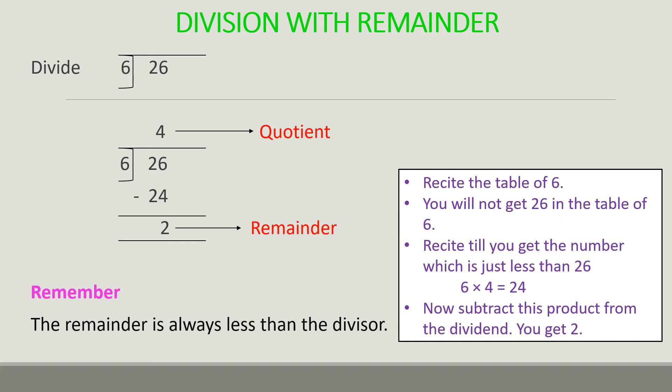We have to first recite the table of 6: 6 ones are 6, 6 twos are 12, 6 threes are 18, 6 fours are 24, and 6 fives are 30. So 30 we can't write here, so we have to take 6 fours are 24.